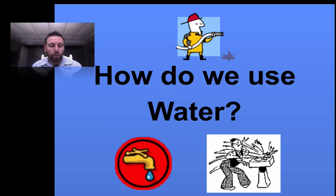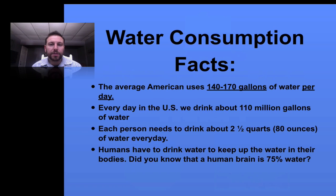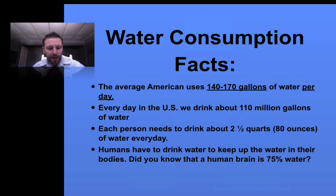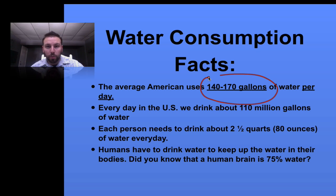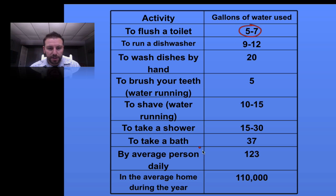There are a couple of different ways we use water. Here are some water consumption facts: the average American uses about 140 gallons of water per day. In the US we drink about 110 million gallons of water. Most people know we need about 80 ounces per day to drink, but the big fact is 140 gallons per day total, because we can change the amount we're using. It takes about 4 gallons to flush the toilet, 5 gallons for a shower, 15 to 30 gallons for a longer shower, and about 40 gallons for a bath.